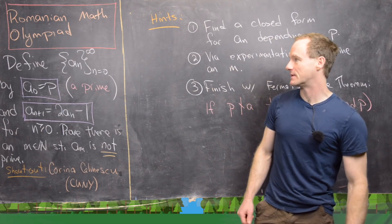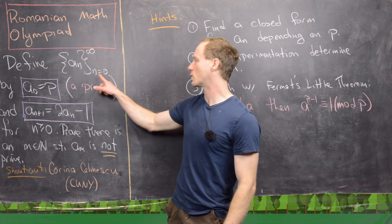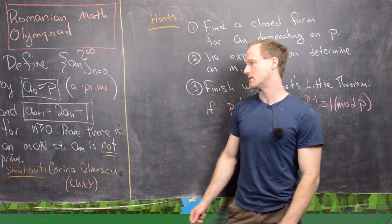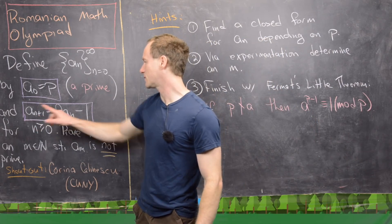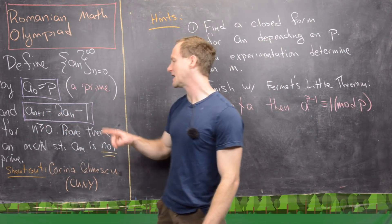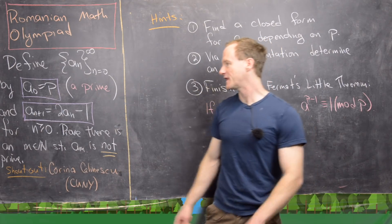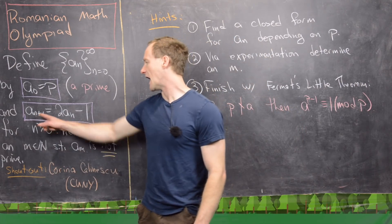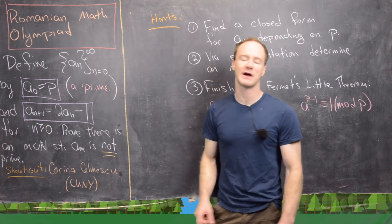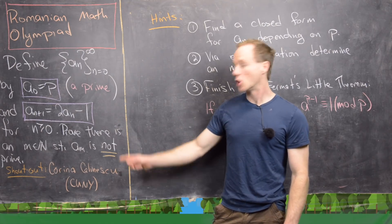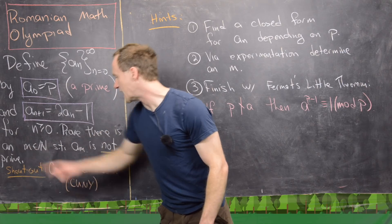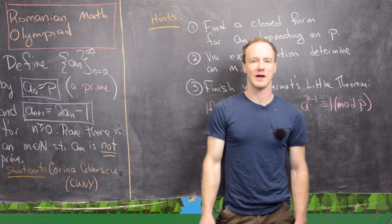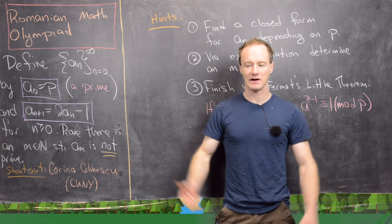So let's look at the statement. We want to define the sequence a_n, where n goes from 0 to infinity, by a_0 equals p, which is any prime number, and a_{n+1} equals 2a_n minus 1 for n greater than or equal to 0. So a_1 is equal to 2a_0 minus 1, which is 2p minus 1, a_2 is equal to 2a_1 minus 1, and so on. The goal is to prove that there is an m, which is a natural number, such that a_m is not prime — in other words, this sequence is not made of all prime numbers.